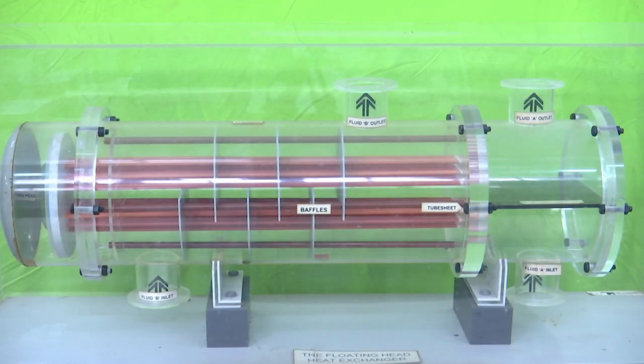This is a model of a shell and tube heat exchanger. This is a 1-2 pass heat exchanger, that is the single shell pass and double tube pass. This is a transparent one so that we can see the internal structure of the heat exchanger.